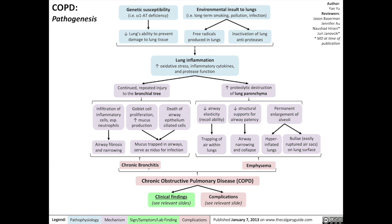Taken together, chronic bronchitis and emphysema represent the two most common conditions under the umbrella of chronic obstructive pulmonary disease.